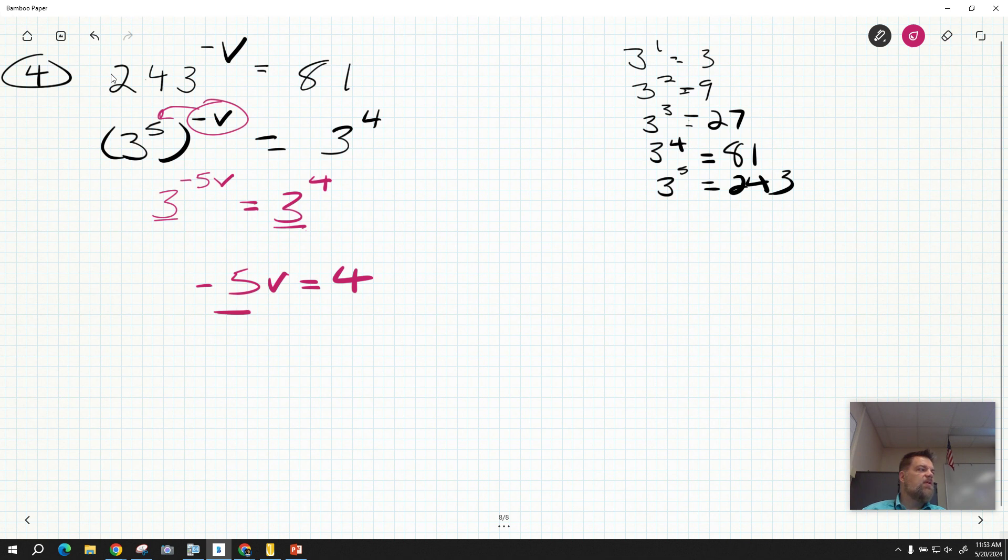Well, how do I solve that? I'm going to divide by negative 5, divide by negative 5, and v equals negative 4 fifths. That's my answer.